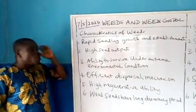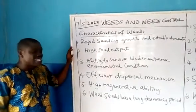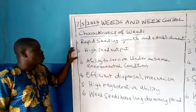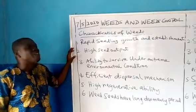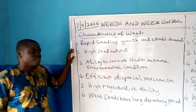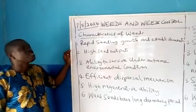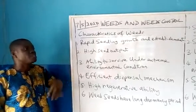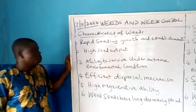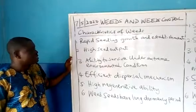Two: high seed output. That means the number of seeds you can get from weeds is very high, and they are also effectively dispersed. Three: weeds also have the ability to survive under extreme environmental conditions.